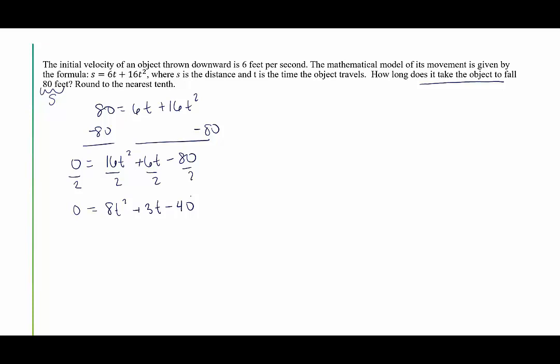I could check to see if it's factorable, but given that the problem says round to the nearest tenth, I'm under the impression that I'm going to want my calculator. So I'm going to use the quadratic formula instead. The quadratic formula is, in this case t, normally we say x, but in this case t, is equal to negative b plus or minus the square root of b squared minus 4ac all divided by 2a. In this case we have a is 8, b is 3, and c is negative 40. Let's plug those in.